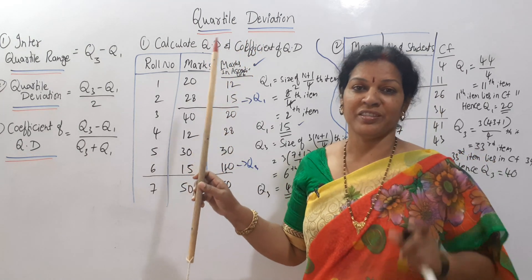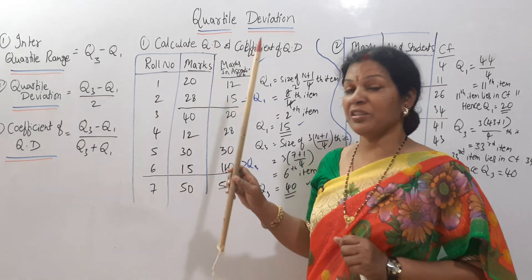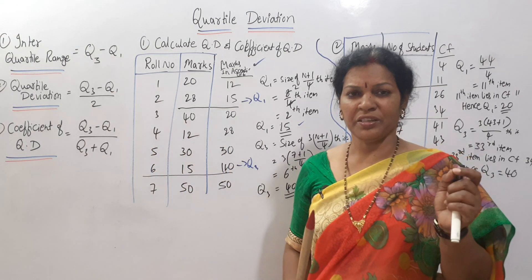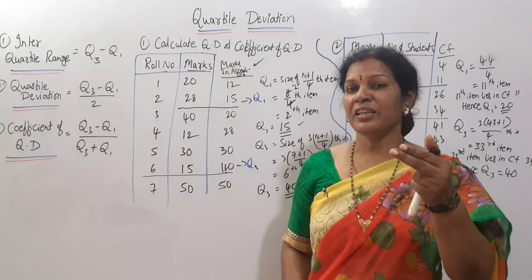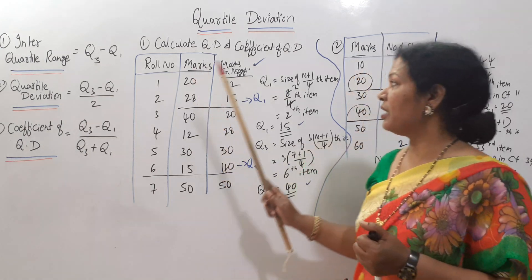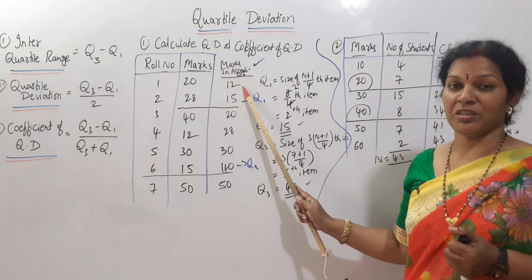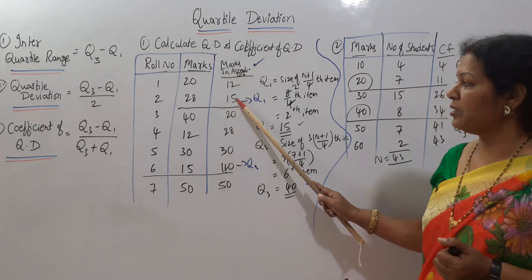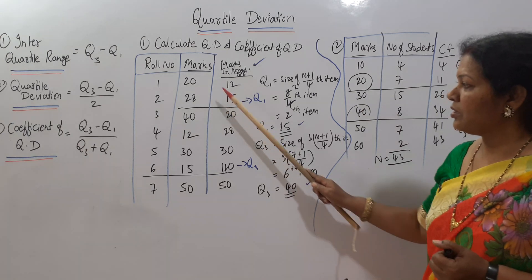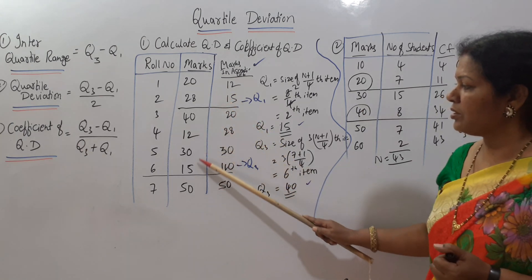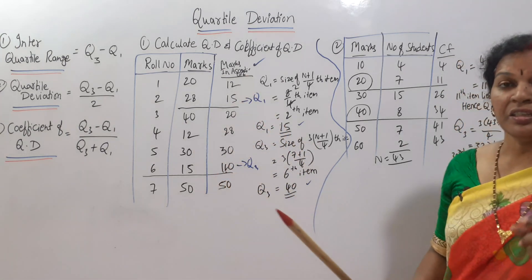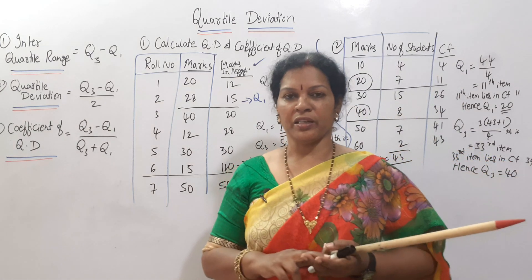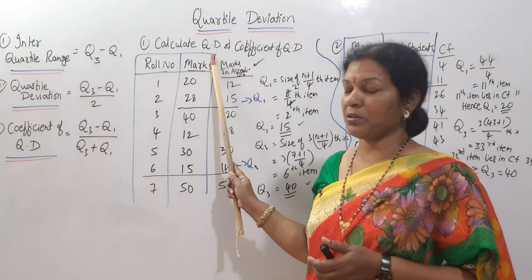This is the individual series. The first step is to arrange the data in ascending order. For example, we have some marks — numbers like 20, 28, 30, 50, and so on — arranged in ascending order. From this arrangement, we calculate Q1 and Q3 to find the quartile deviation.